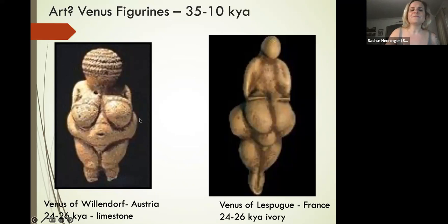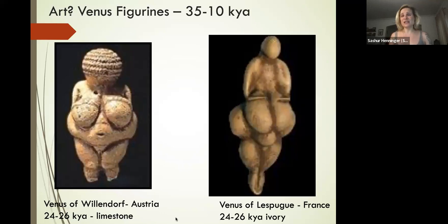For females, the body is very voluptuous—large breasts, pregnant-looking stomachs. Many archaeologists and anthropologists have argued that these are potentially symbols of religion; they may be representations of fertility goddesses.